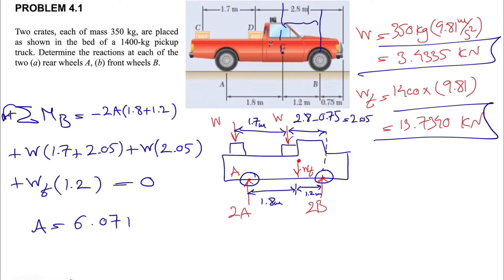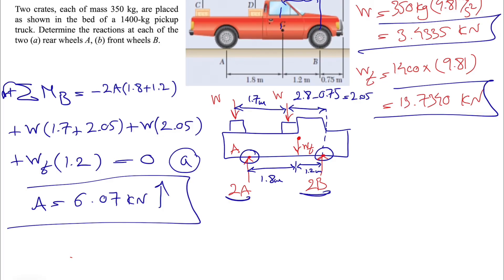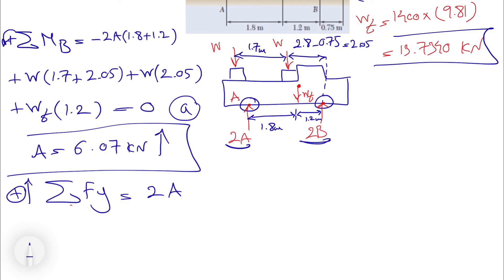We already found the weights of the crate and pickup truck, so the only unknown is A. Solving gives us A = 6.07 kilonewtons. This is the reaction for the pair of rear wheels, so each rear wheel carries 6.07 kN divided by 2. For part B, we can either take moments about point A or use the sum of forces in the Y-direction.